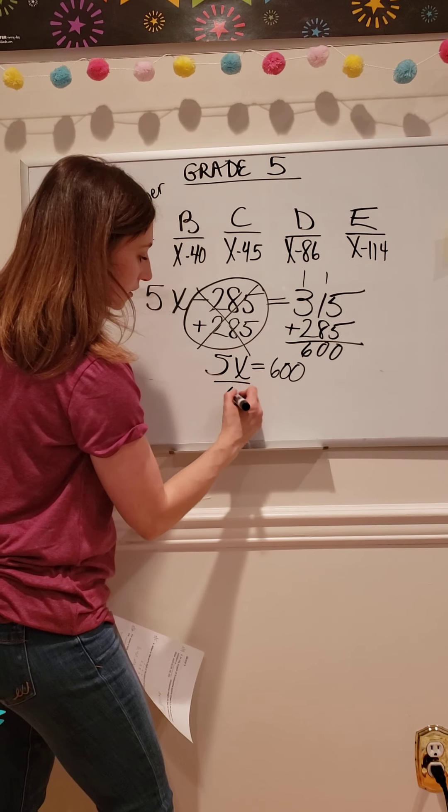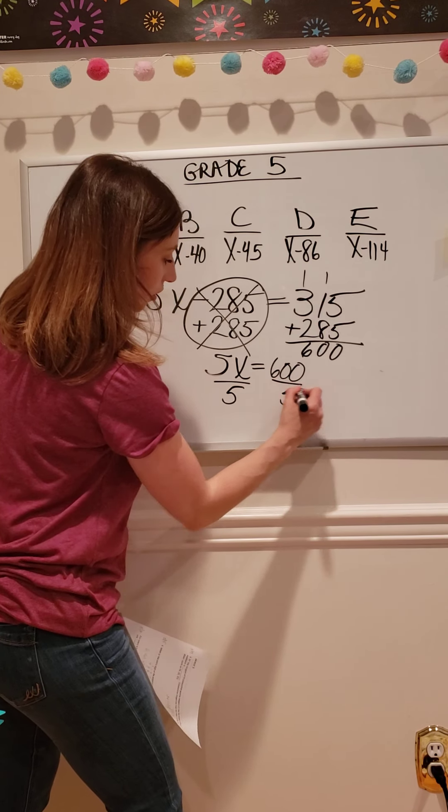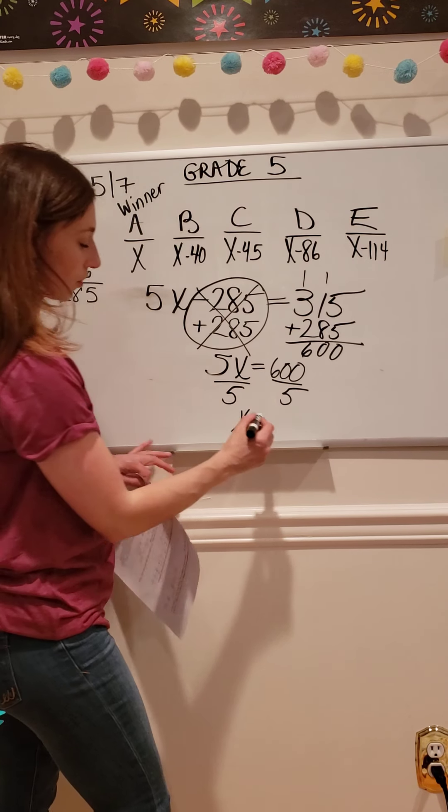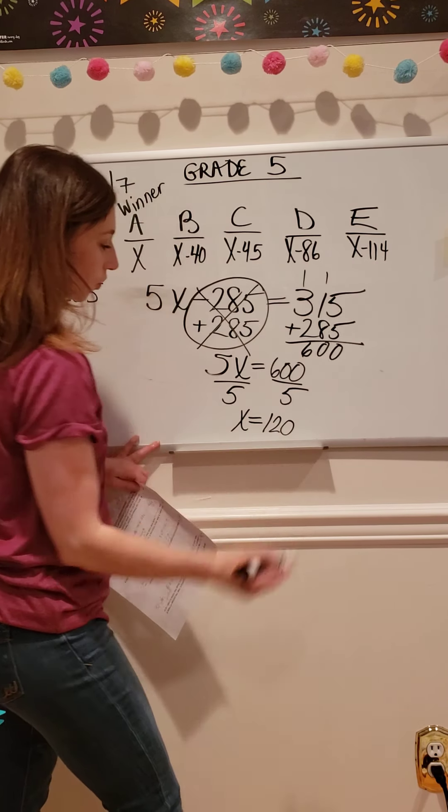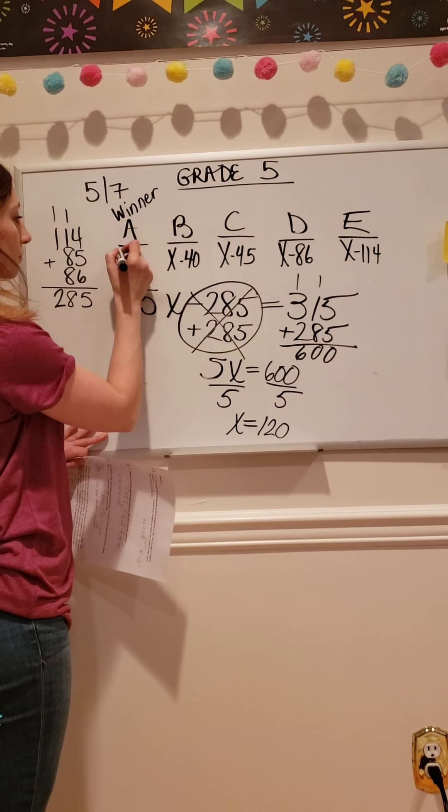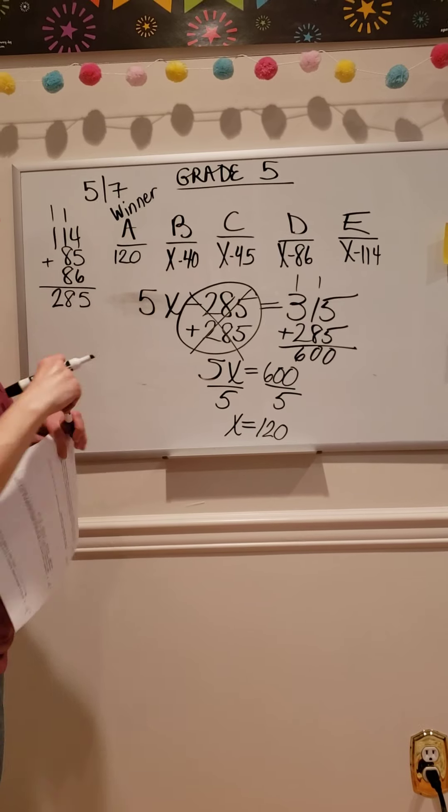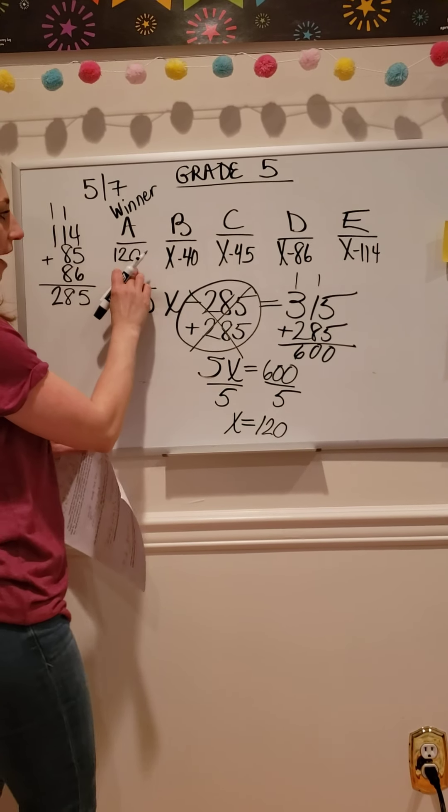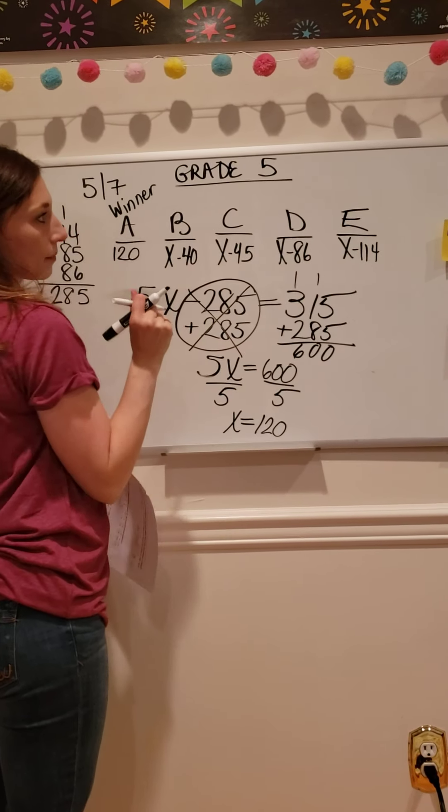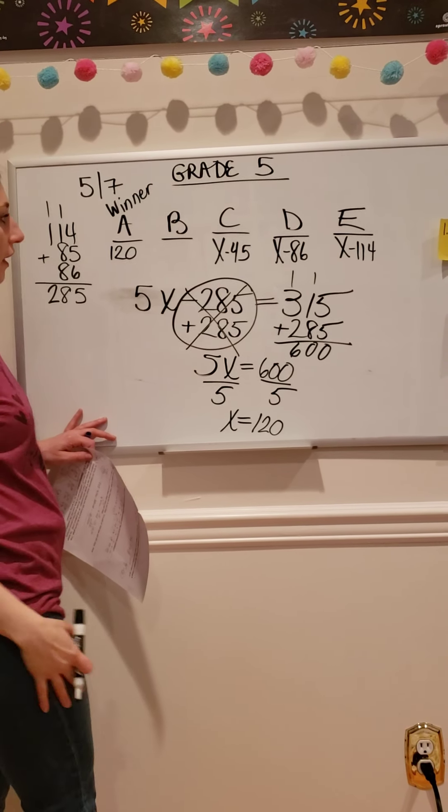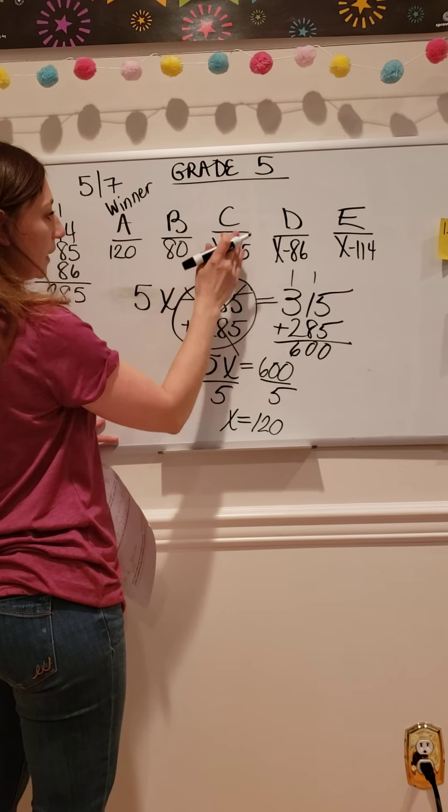And now I'm going to divide by 5 on each side. And that tells me that X is equal to 120. So I'm going to fill that in. The number of votes that A got is 120. But now I'm going to go through and figure out how many votes they all got. So if this is 120 minus 40, that means that person got 80.